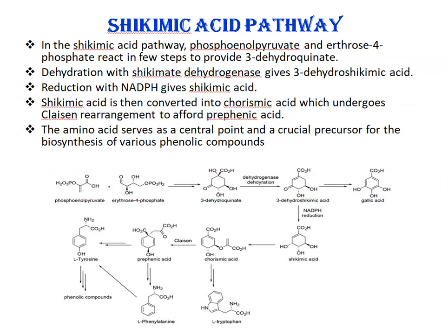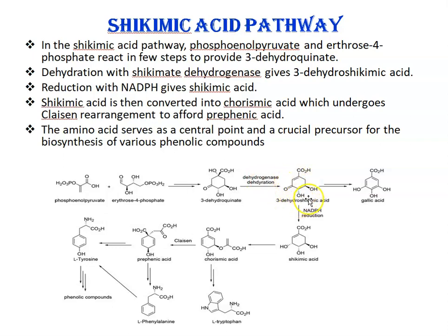In the shikimic acid pathway — looking at this diagram — phosphoenolpyruvate and erythrose-4-phosphate react with each other in a few steps to provide 3-dehydroquinate. Then dehydration of this 3-dehydroquinate with the enzyme shikimate dehydrogenase gives 3-dehydroshikimic acid. The next step is reduction — this 3-dehydroshikimic acid could also lead to formation of gallic acid in several steps. With reduction by NADPH, it gives shikimic acid.